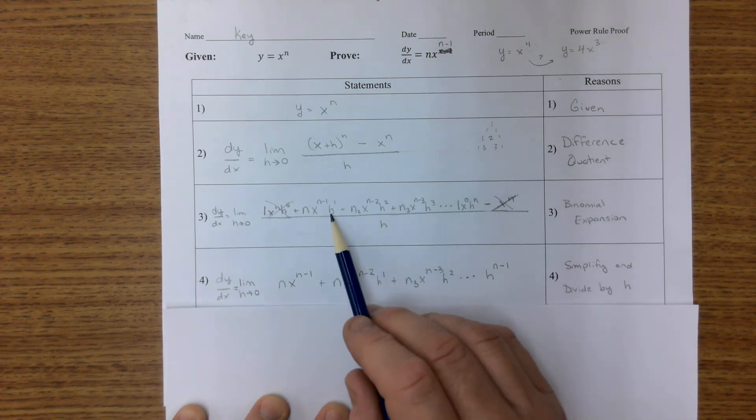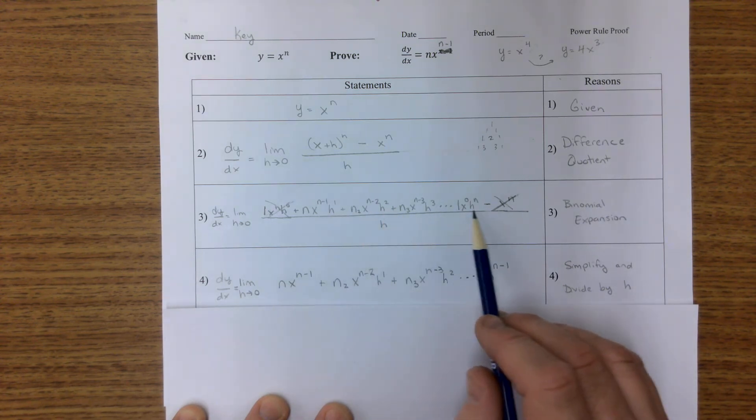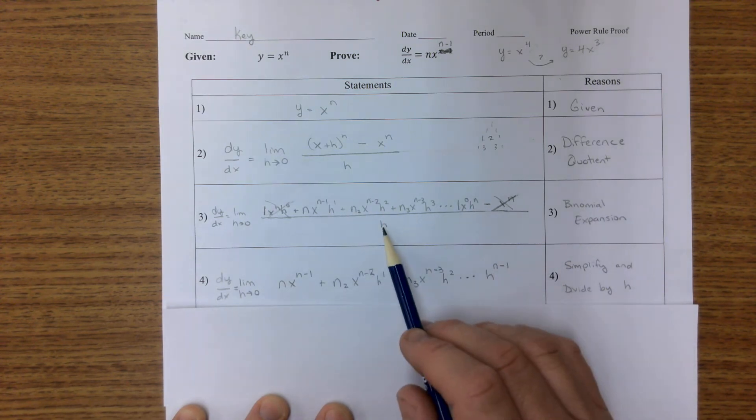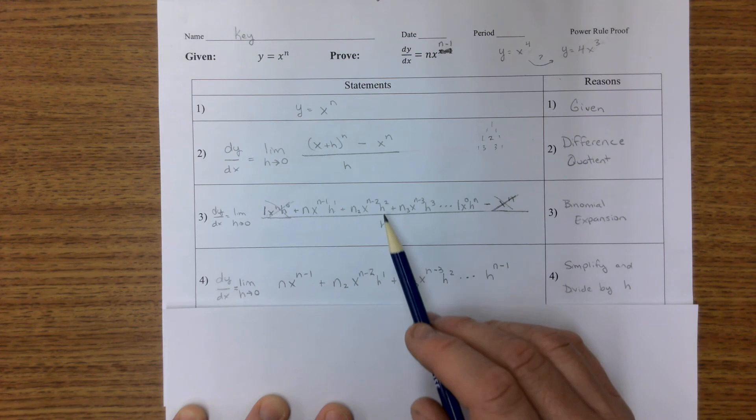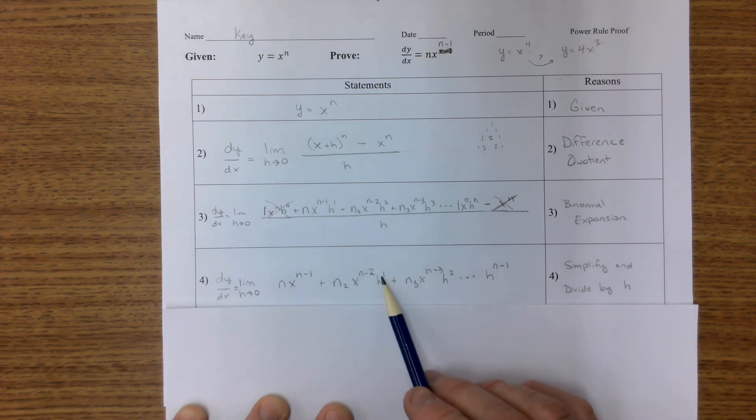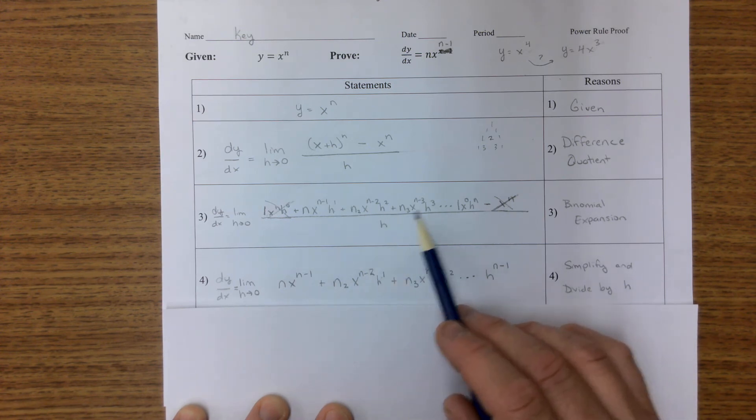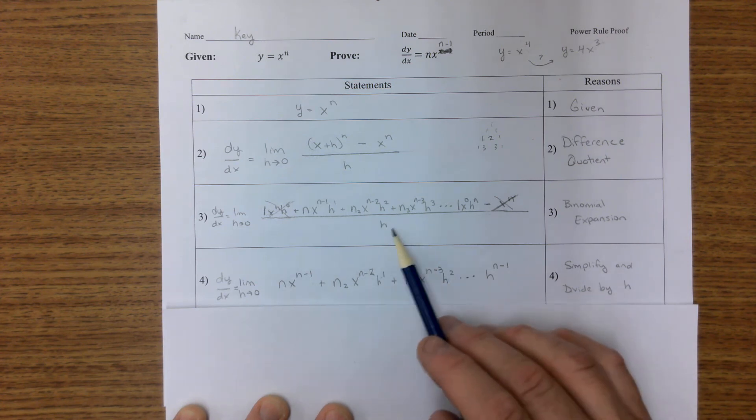The second thing to see is that everything else has an h in it. There's an h, an h, an h, and a whole bunch of h's there. So I can divide this h in there. And if I divide the h there it's gone. If I divide the h there, now h^2 becomes h^1, and right here h^3 divided by h becomes h^2, and right here h to the n divided by h becomes h to the n minus one.